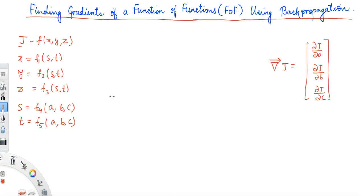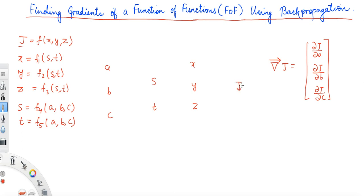To find this gradient vector, we will start making a graph — sometimes in deep learning it is known as a computation graph. The input variables are a, b, and c, and then S and T depend on a, b, and c. Then we have X, Y, and Z, which depend on S and T.